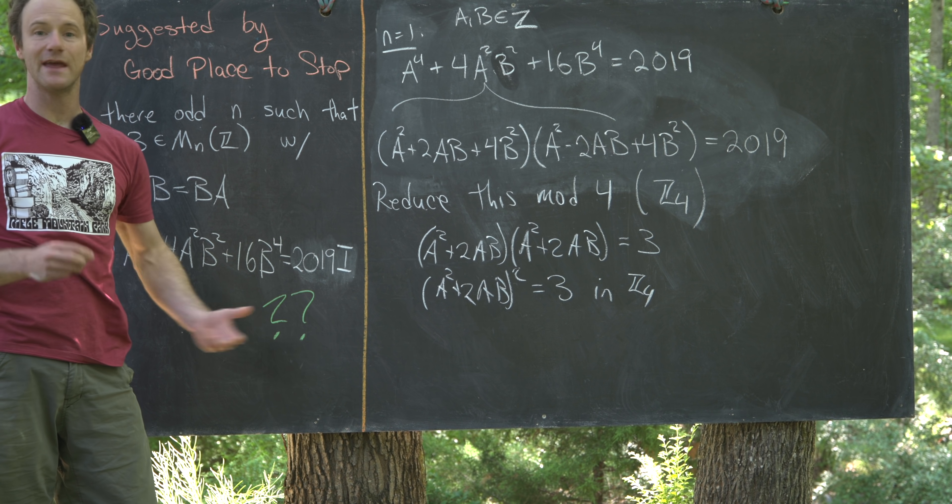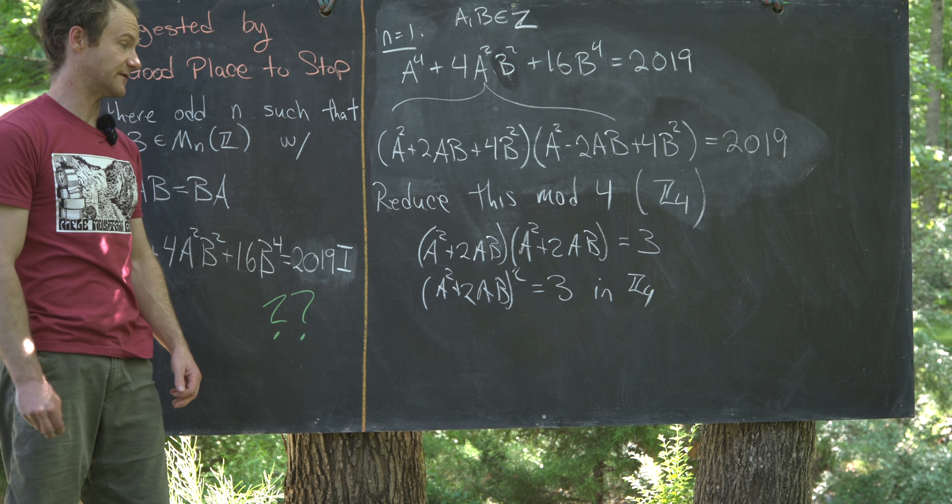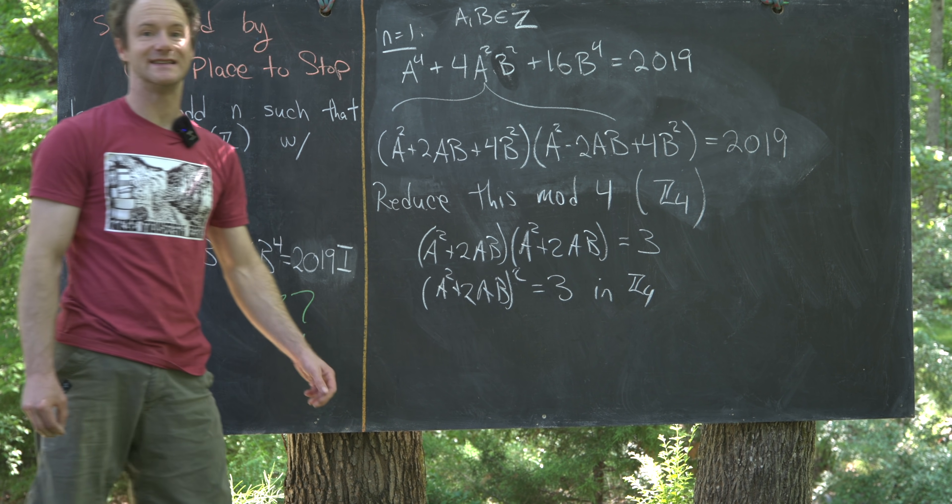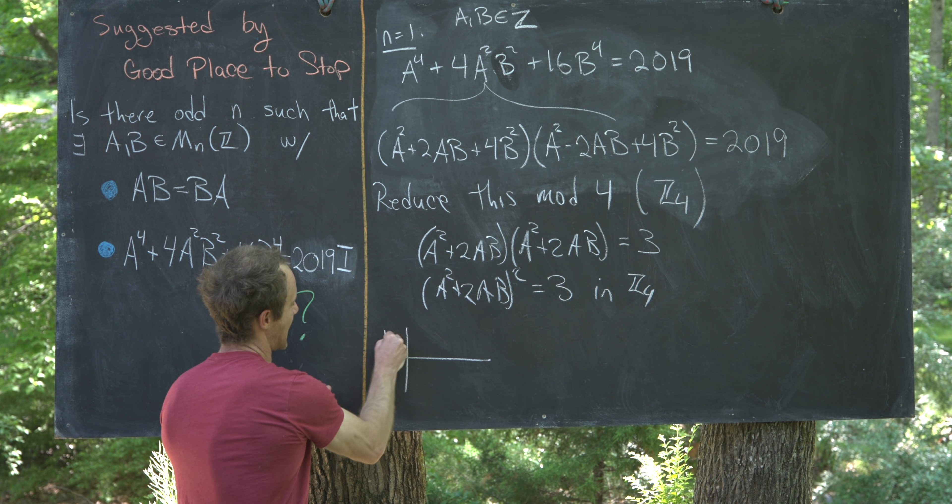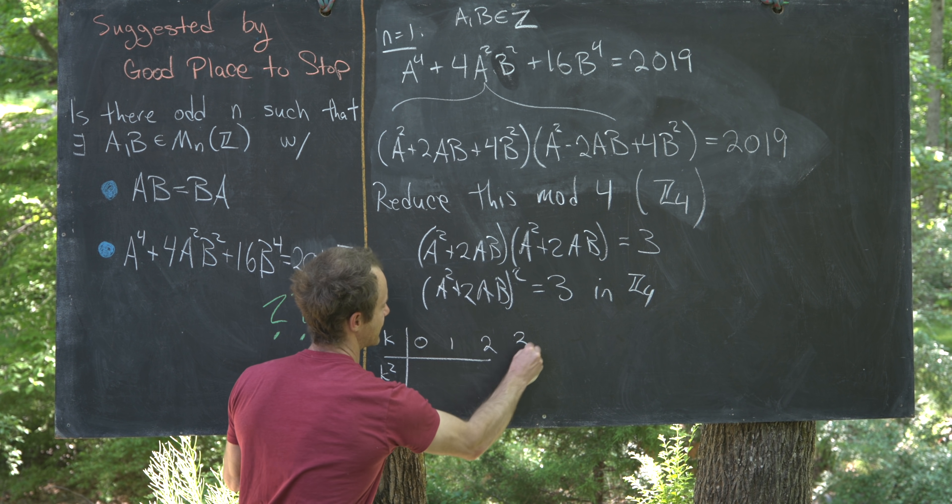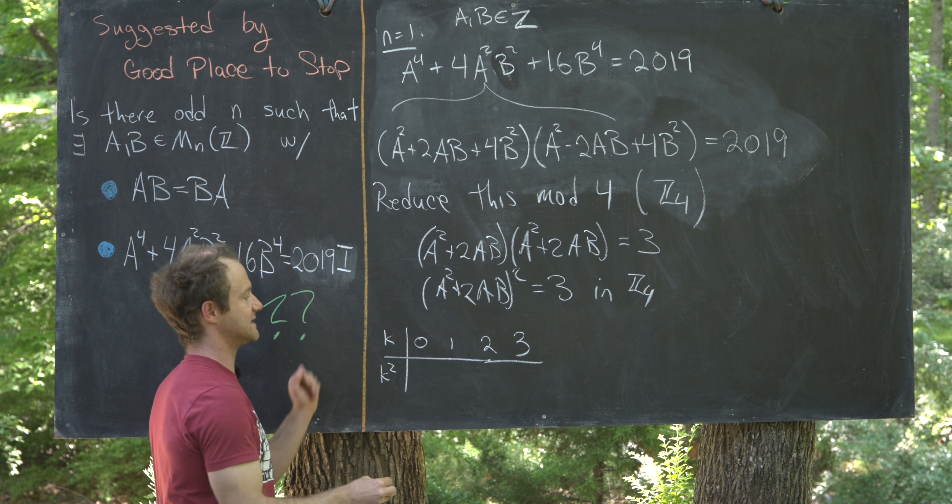Now, if we make a table of the perfect squares in Z4, we'll notice that 3 is never a perfect square. We can do that really quickly. Let's say we've got k here and k squared here. 0, 1, 2, 3. Those are all of the elements in Z4.